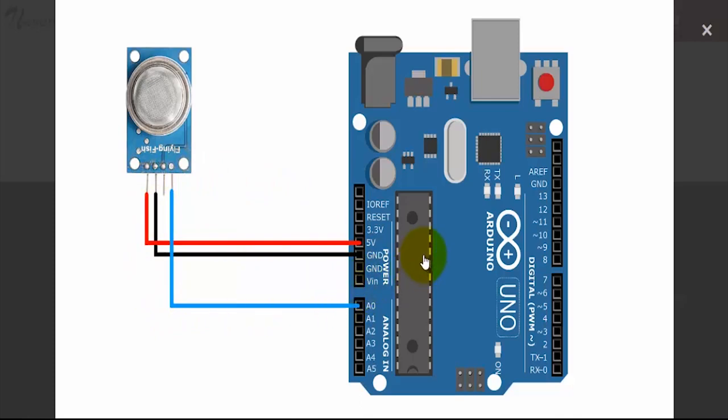Now simply upload a sketch into the Arduino to read values from the sensor and print them on the serial monitor. It will then detect LPG concentrations in air and output the analog value on the serial monitor.